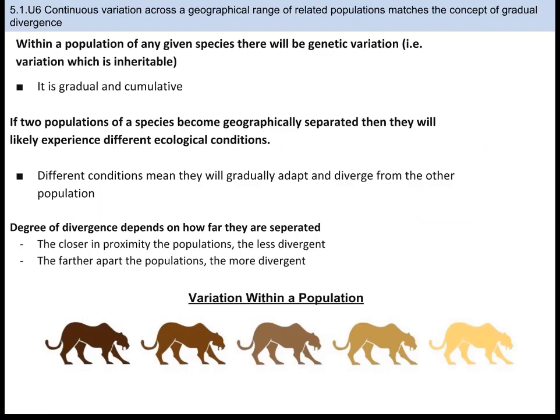Look at the cats at the bottom of the slide — they're different colors. They have what is known as a variation of a trait for fur color; some are darker and some are lighter. Humans have that in traits as well. Most living things have variations — they are gradual and they accumulate over time. If two populations of a species become geographically separated, then they will likely experience different ecological or environmental conditions, and will gradually adapt and diverge. The closer populations are geographically, the less different they will be, and the further away, the more unique. So this geographical divergence is also another line of evidence for evolution.